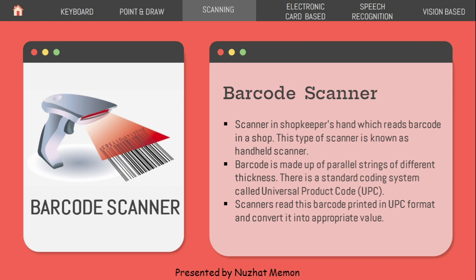Barcode scanner — you may have seen this in big malls. The scanner in the shopkeeper's hand which reads barcodes is known as a handheld scanner. A barcode is made up of parallel strings of different thickness. There is a standard coding system called UPC (Universal Product Code). Scanners read this barcode printed in UPC format and convert it into an appropriate value.